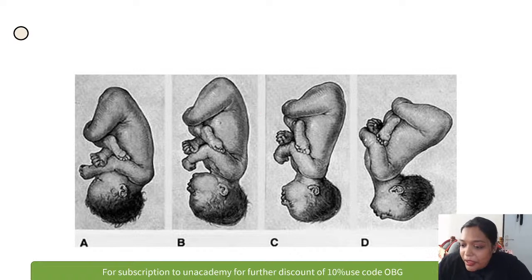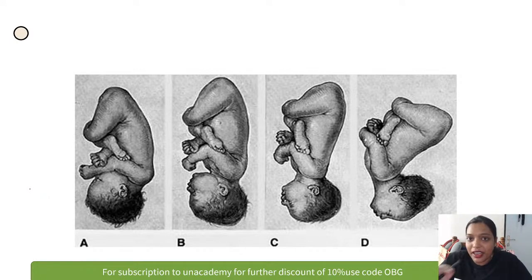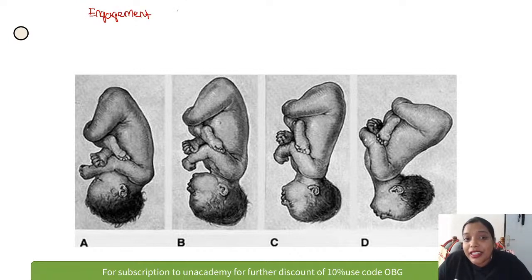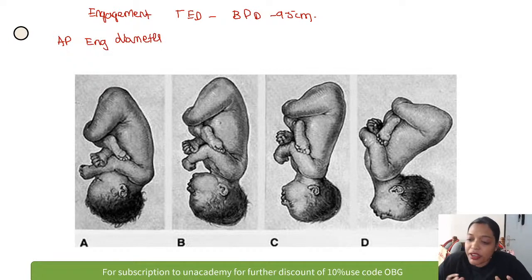Now the engaging diameters. Whatever the degree of flexion, the transverse engaging diameter is always the biparietal diameter at 9.5 cm. But the anteroposterior engaging diameter keeps changing depending on the degree of flexion of the fetal head. I have a mnemonic to help remember this.